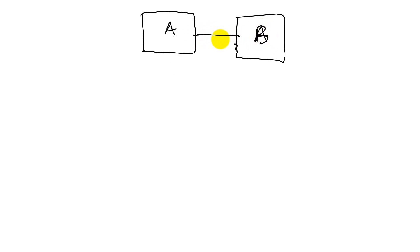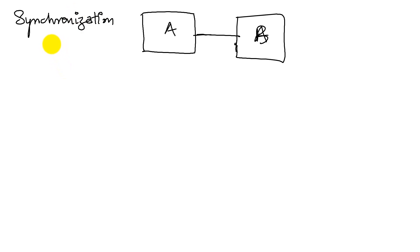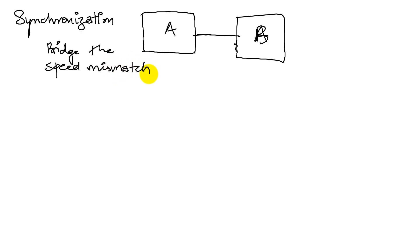Let's look at device communication. Let's say we have two devices A and B that want to communicate. One of the things that we have to address in this communication is synchronization. Synchronization is simply a process by which we bridge the speed mismatch between communicating devices. So if A is faster than B, or B is faster than A, or they're the same speed, it still works.